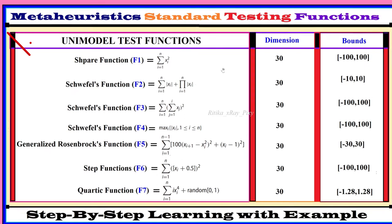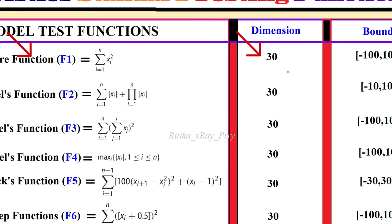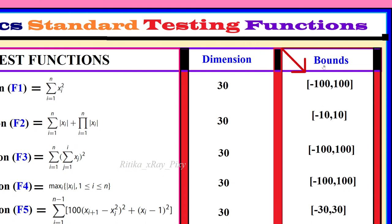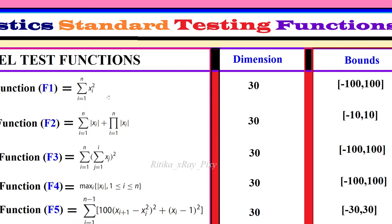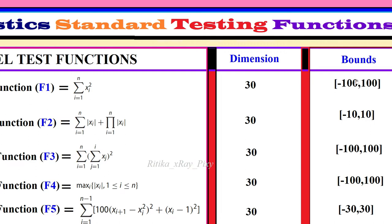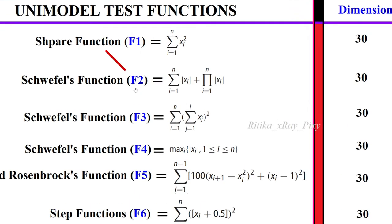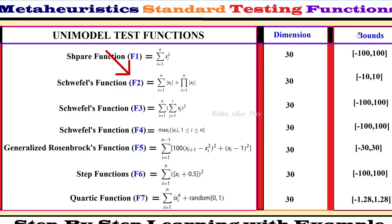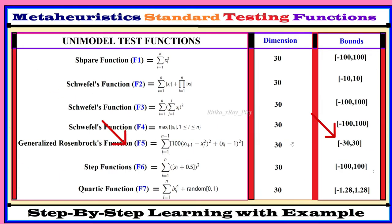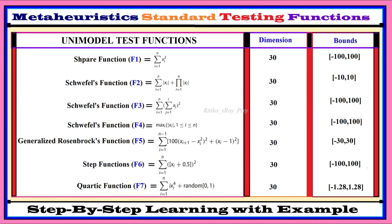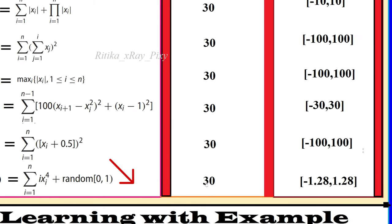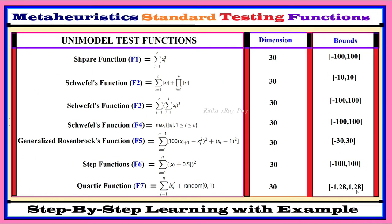For F1, you can see the dimension — the total number of design variables — is 30, and the bounds show the search space boundary: lower bound is minus 100, upper bound is 100. For F2, dimension is 30 and boundary is minus 10 to 10. For F3, dimension is 30 and bounds are minus 100 to 100. For F5, dimension is 30 and bounds are minus 30 to 30. For F7, dimension is 30, lower bound is minus 1.28, upper bound is 1.28.